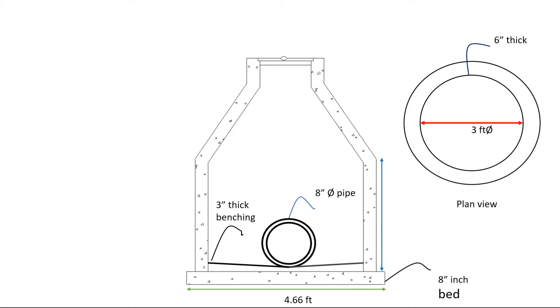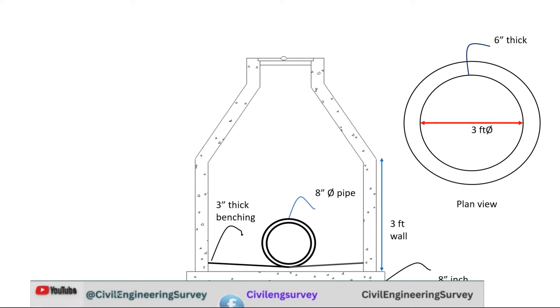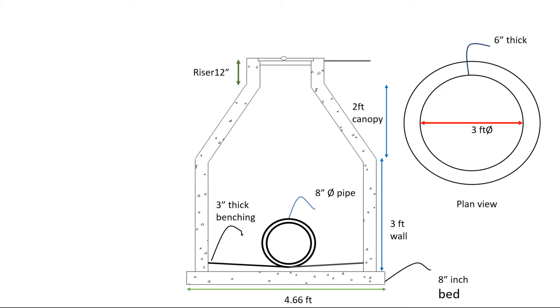Height of wall is 3 feet. Canopy wall is also included at 2 feet, and the riser is 12 inches. This is road top.